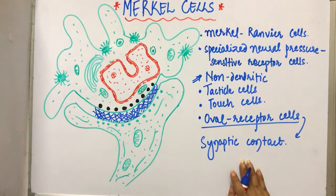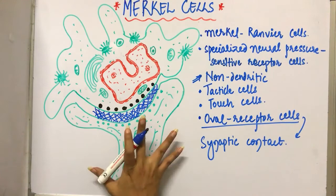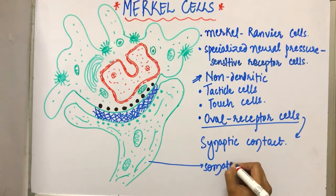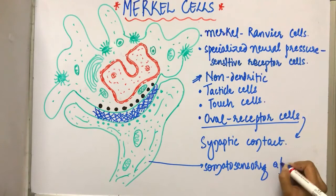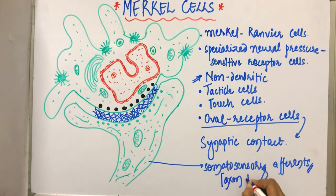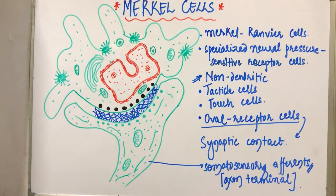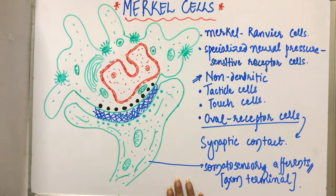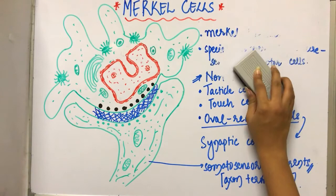They have the synaptic contact with the somatosensory afferent. These Merkle cells have synaptic contact with the somatosensory afferent. They are of neural crest origin — they originate from the neural crest and migrate to the epidermis.